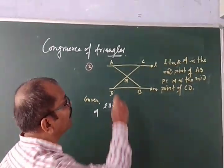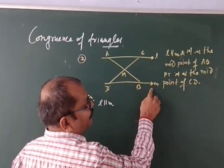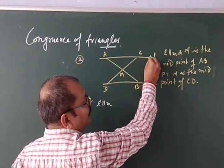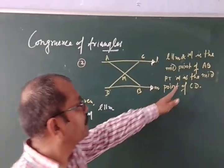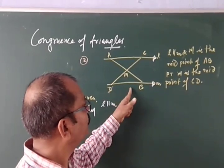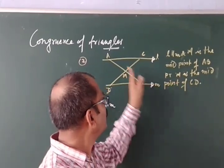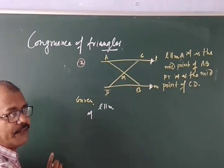What is the question? In this figure, L parallel M. So that is the symbol of indication of parallel line. M is the midpoint of AB. Prove that M is the midpoint of CD. So what is the given term?